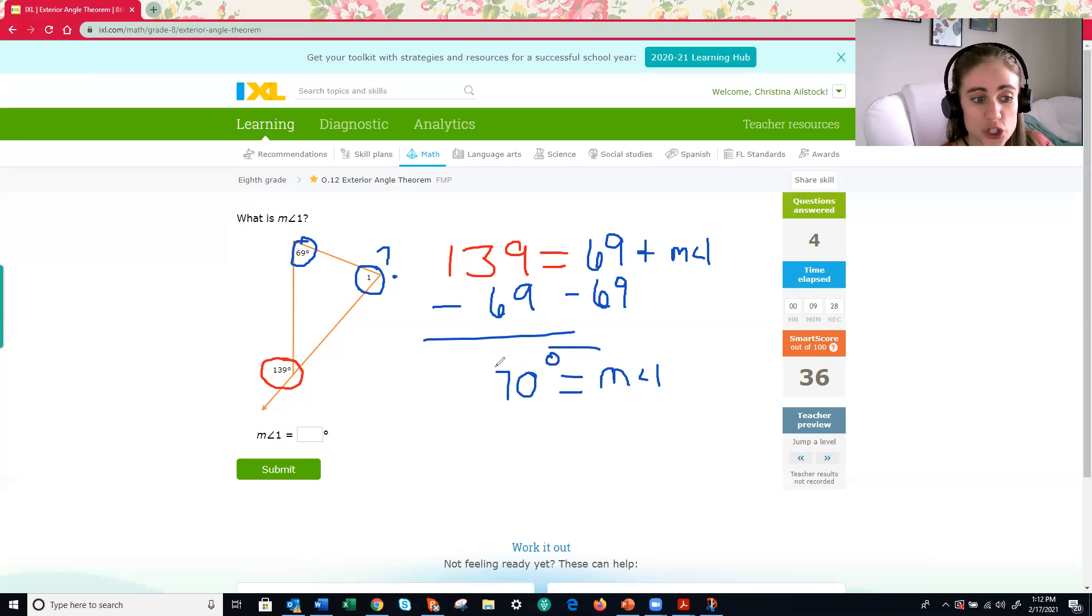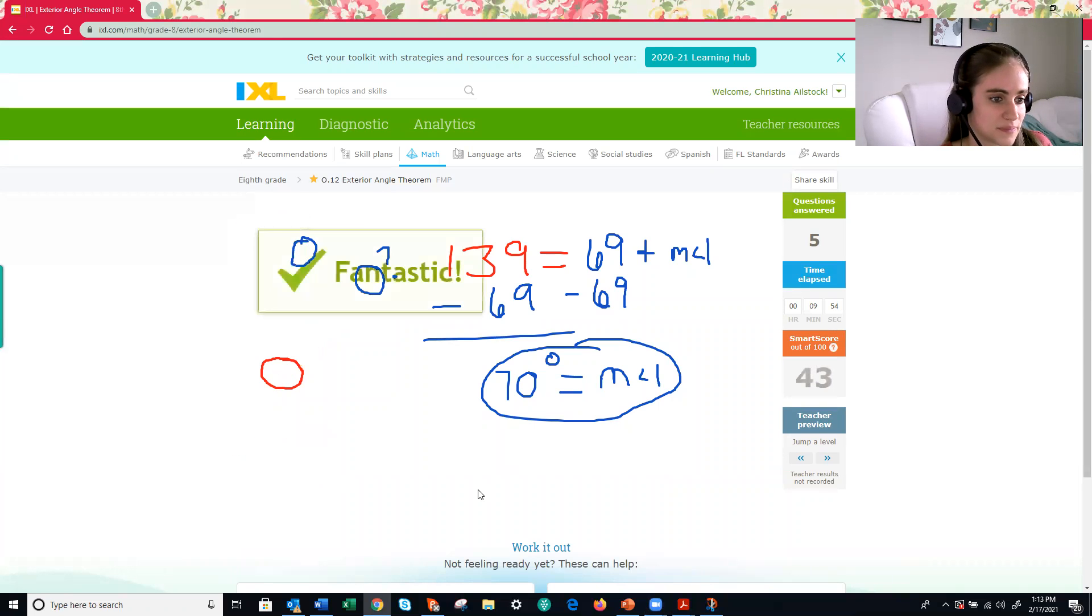70. So 70 is our missing interior angle. And if you were ever unsure and wanted to double check, how could you verify that you found the correct answer? You could basically substitute it, plug it back in. So say, all right, I know that 70 and 69 have to equal my exterior angle. So is 70 plus 69 equal to 139? It is. So that means we didn't make a goof and accidentally subtract wrong.